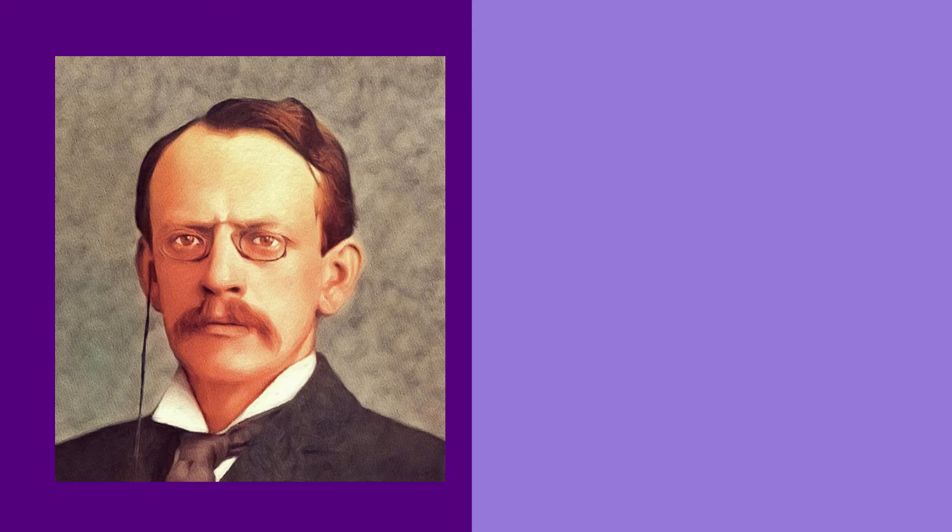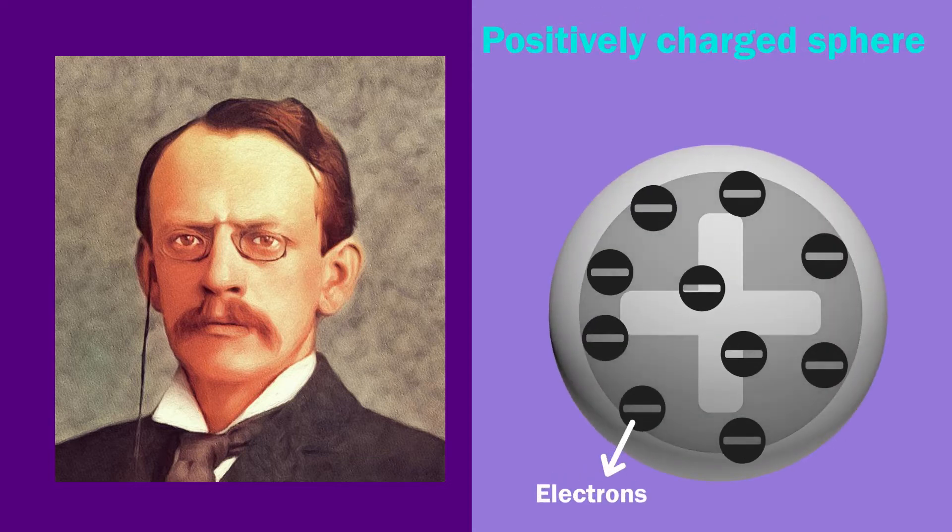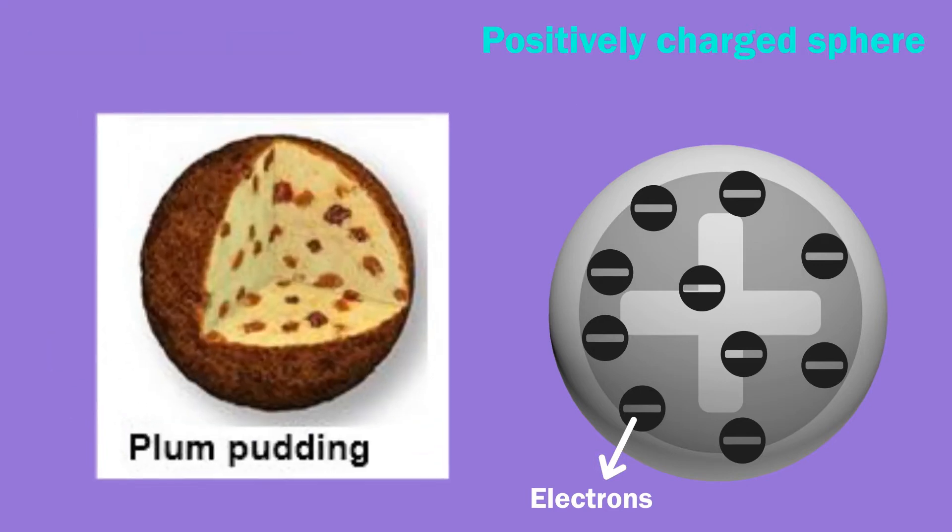According to him, the atom is a big positively charged sphere in which very small size negatively charged electrons are embedded. His model is similar to plum pudding and thus it is also called the plum pudding model of the atom.